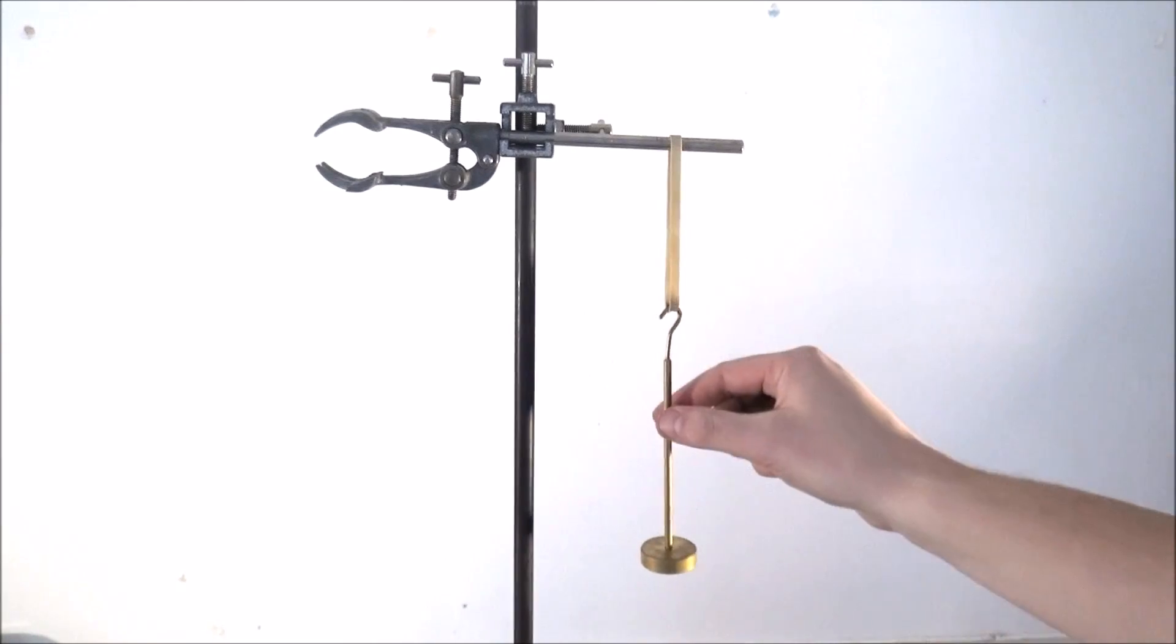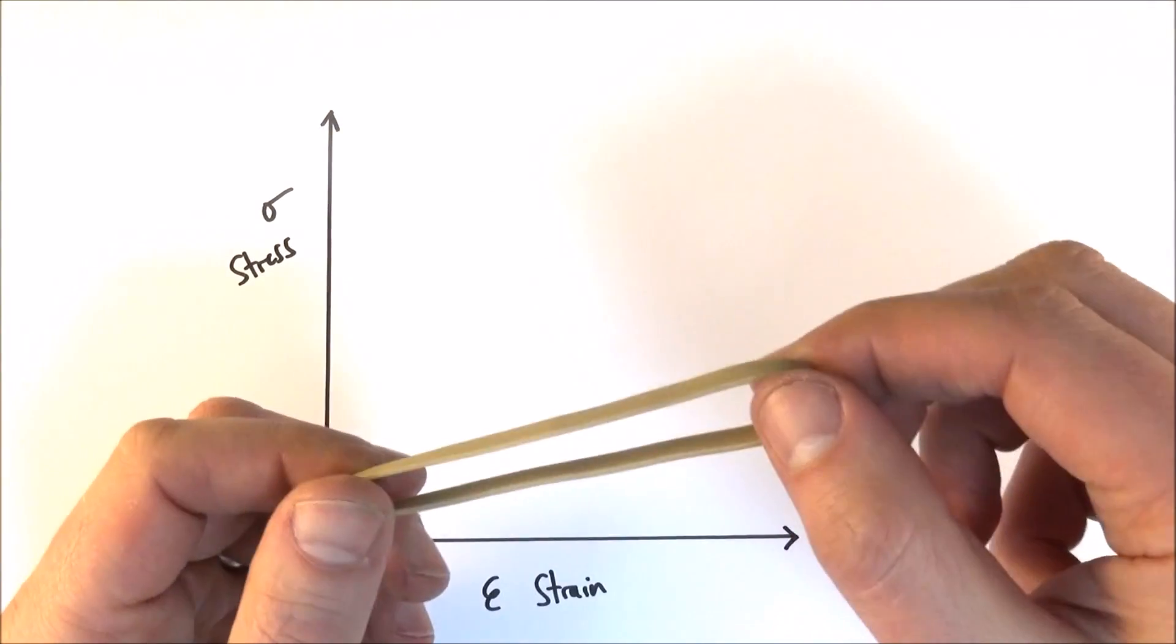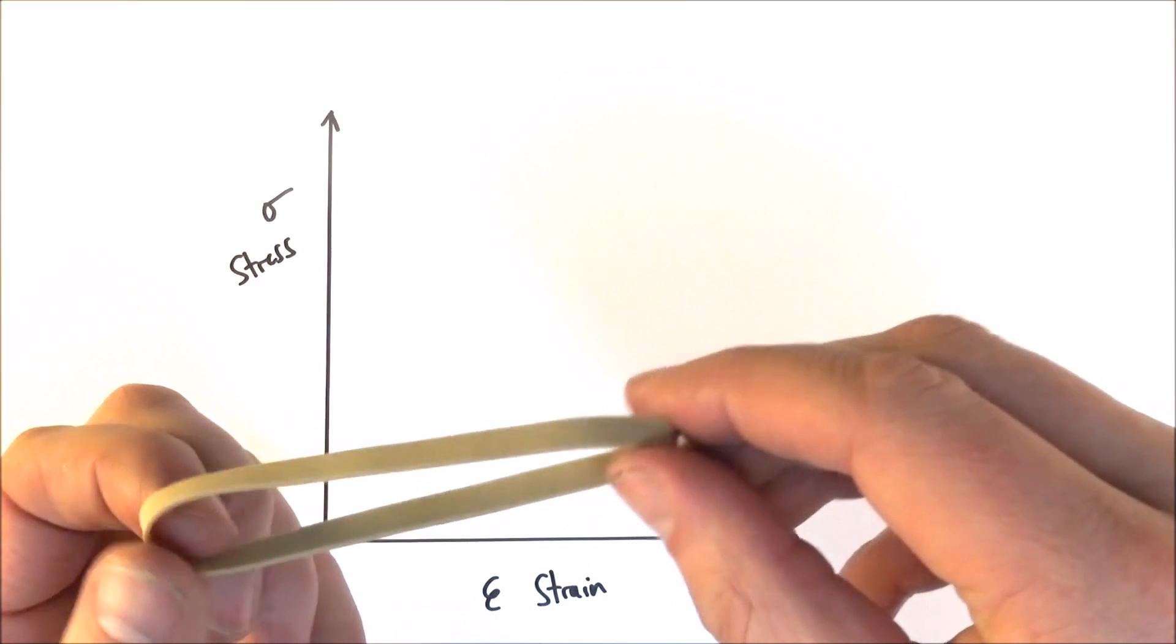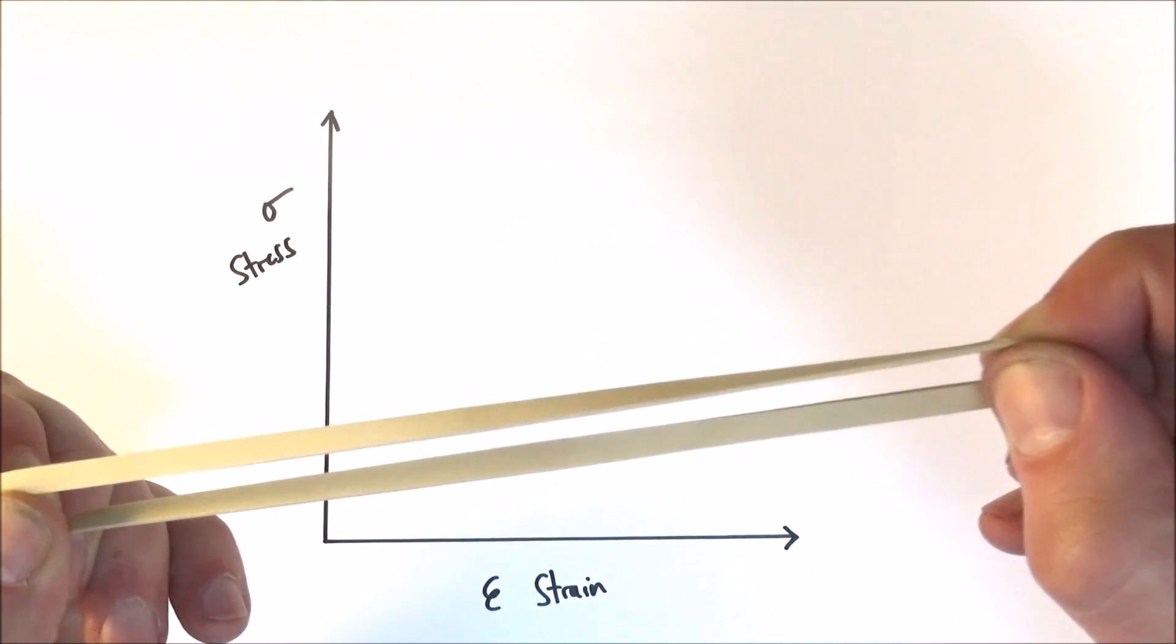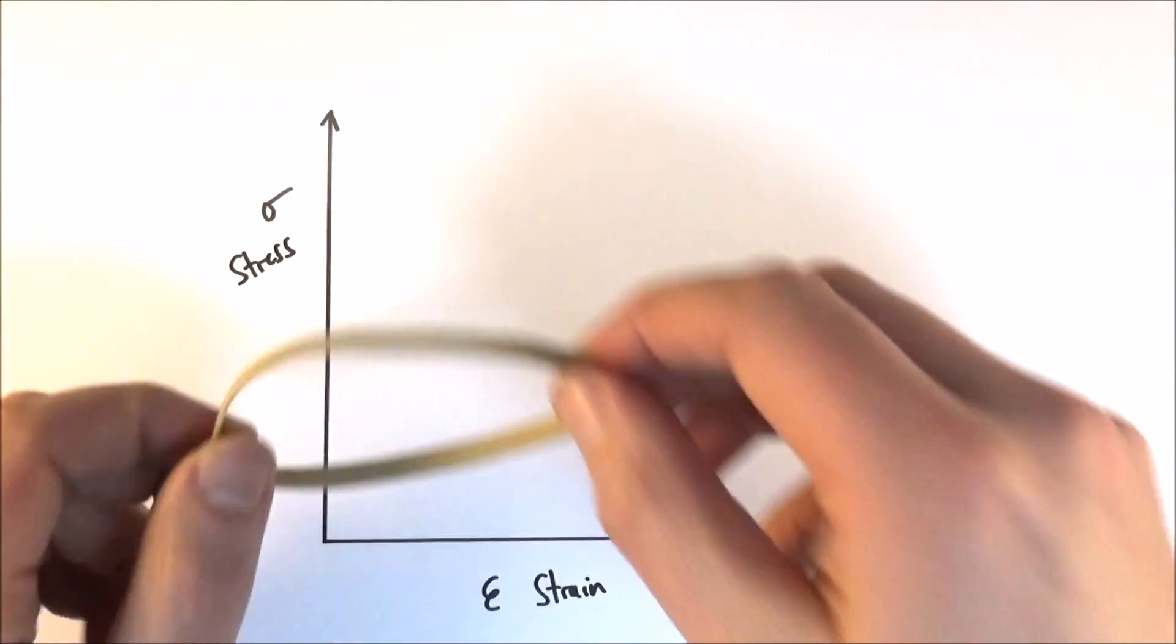What you might find when you do it yourself is if you get a rubber band, first of all it's quite hard to pull, then it's easier, and then at the end it becomes a bit harder again.